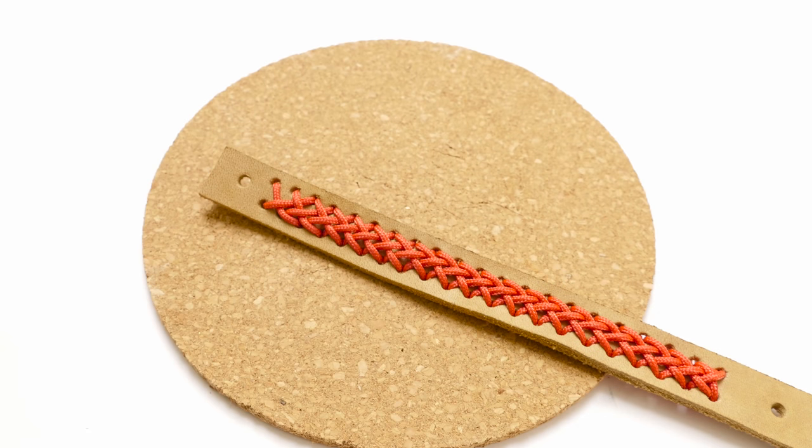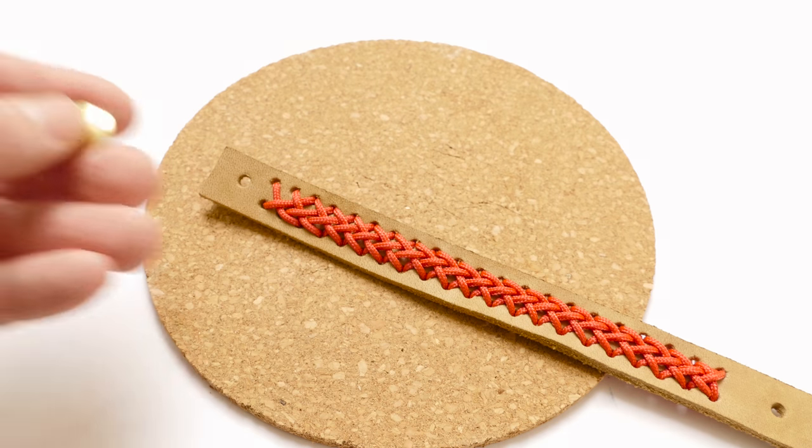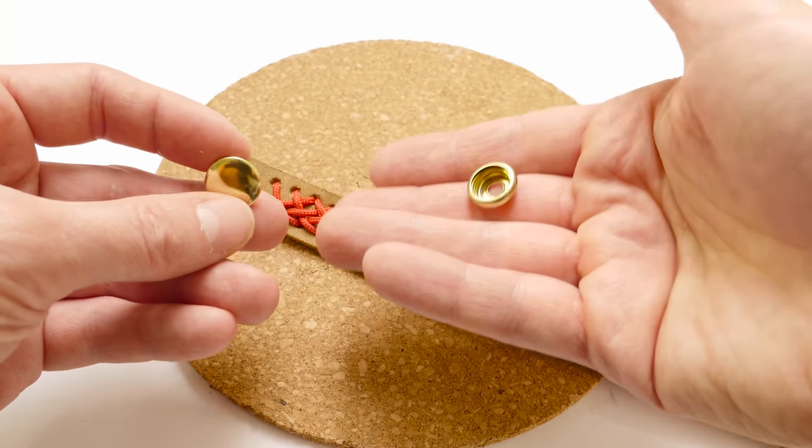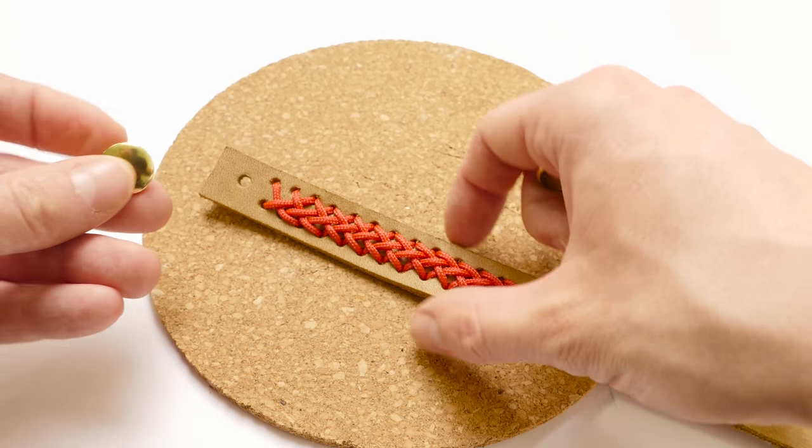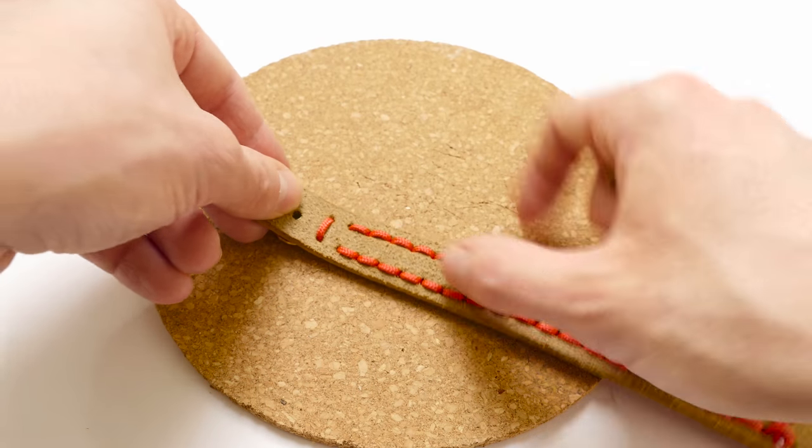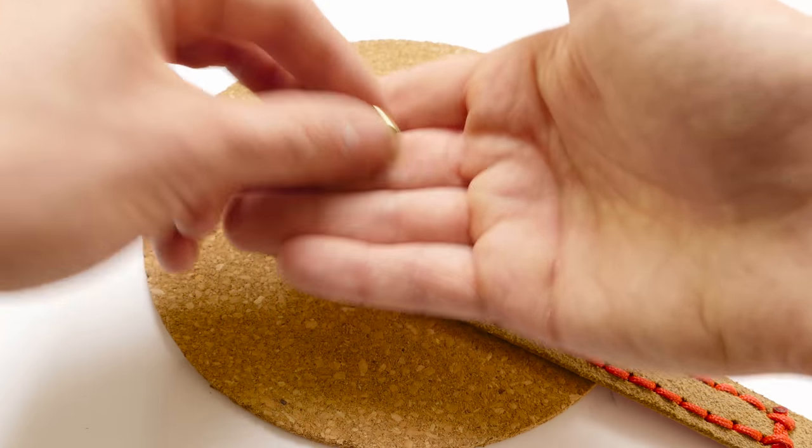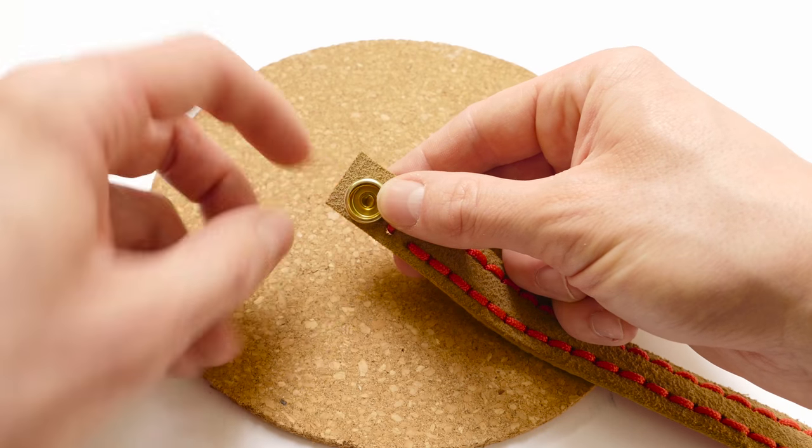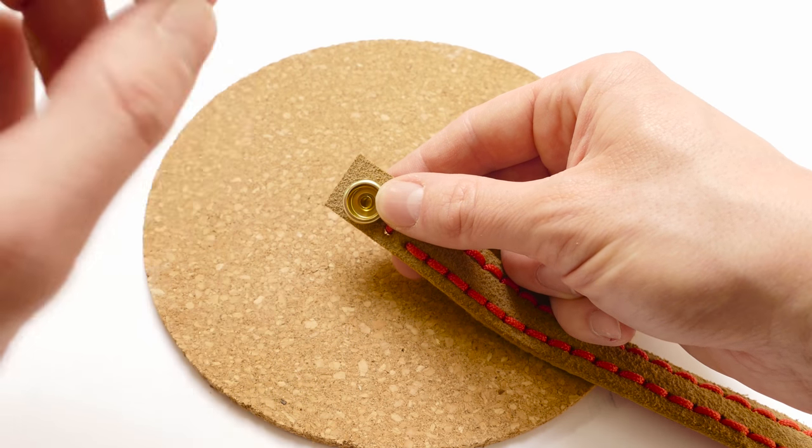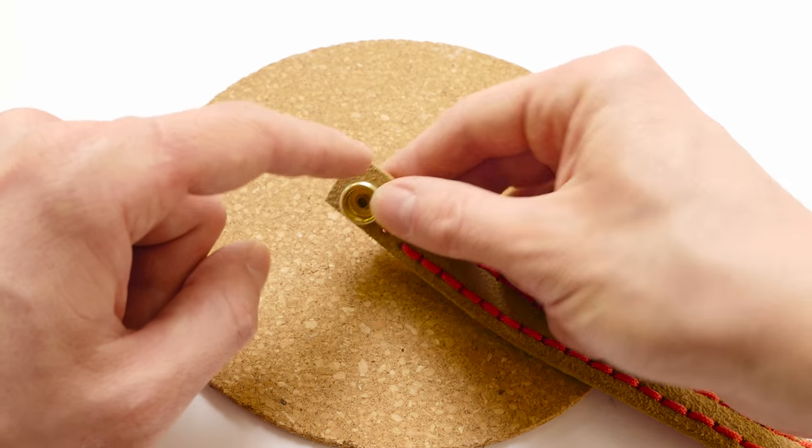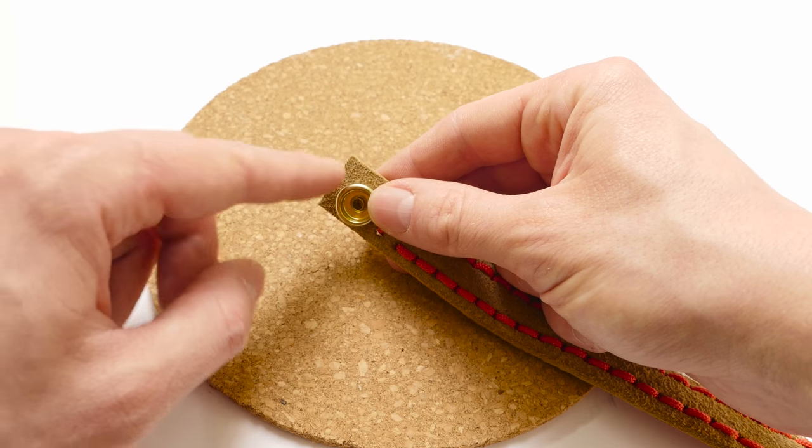Before we can set our snap, we need to make sure that it will work with our leather nicely. To do that, take two pieces of your snap - in my case the cap and the socket. And what we're going to do is place our cap, then our leather over it, then the socket. You need to make sure that in the center here you have enough metal so that you can punch it down and close your snap. If the leather is too thick, take a knife and thin it down a bit.